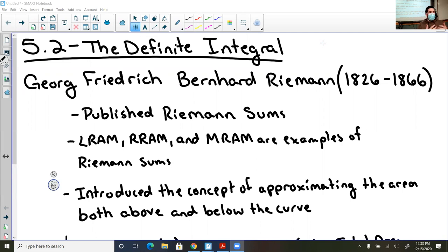So today we're going to talk about Georg Friedrich Bernhard Riemann. He was alive from 1826 to 1866, and he's the one that published what we call Riemann sums. Now Riemann sums is the act of taking rectangles and putting them under a curve and finding the sum of them.